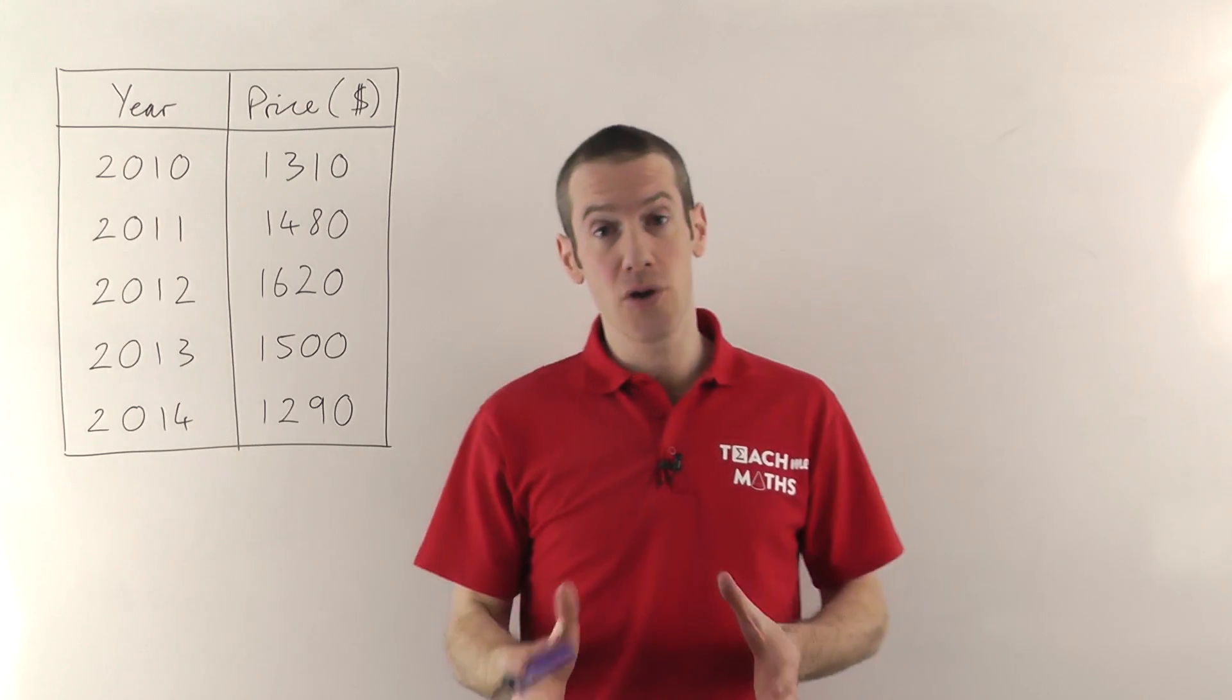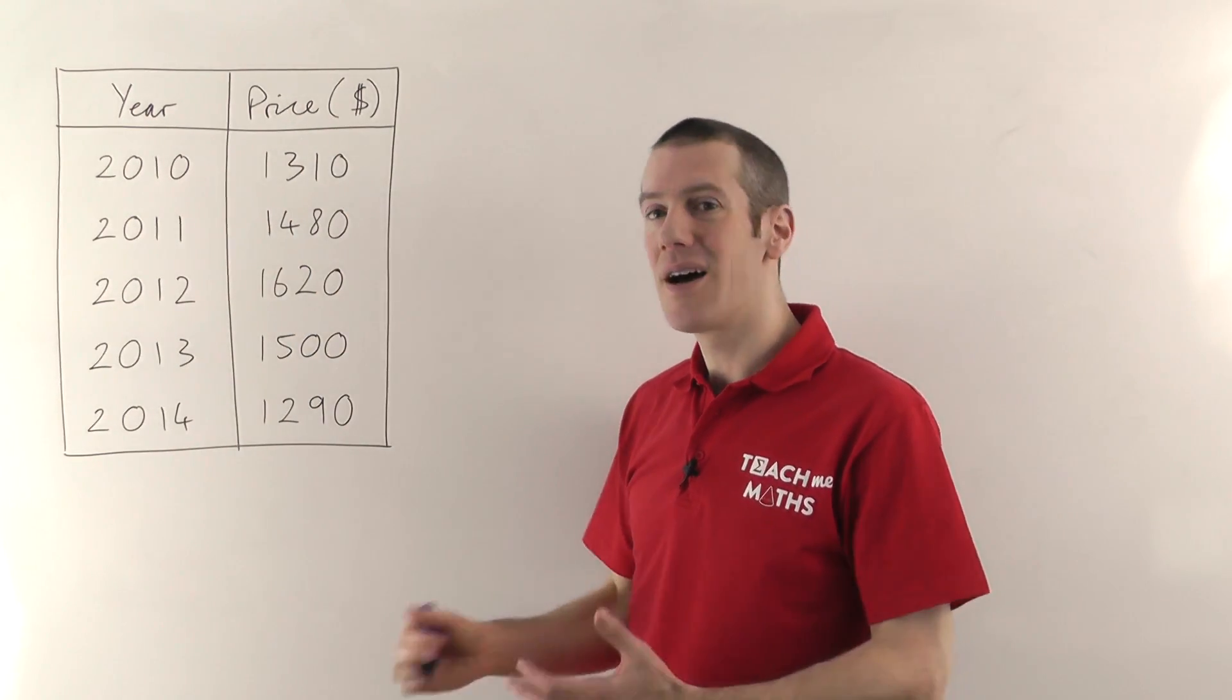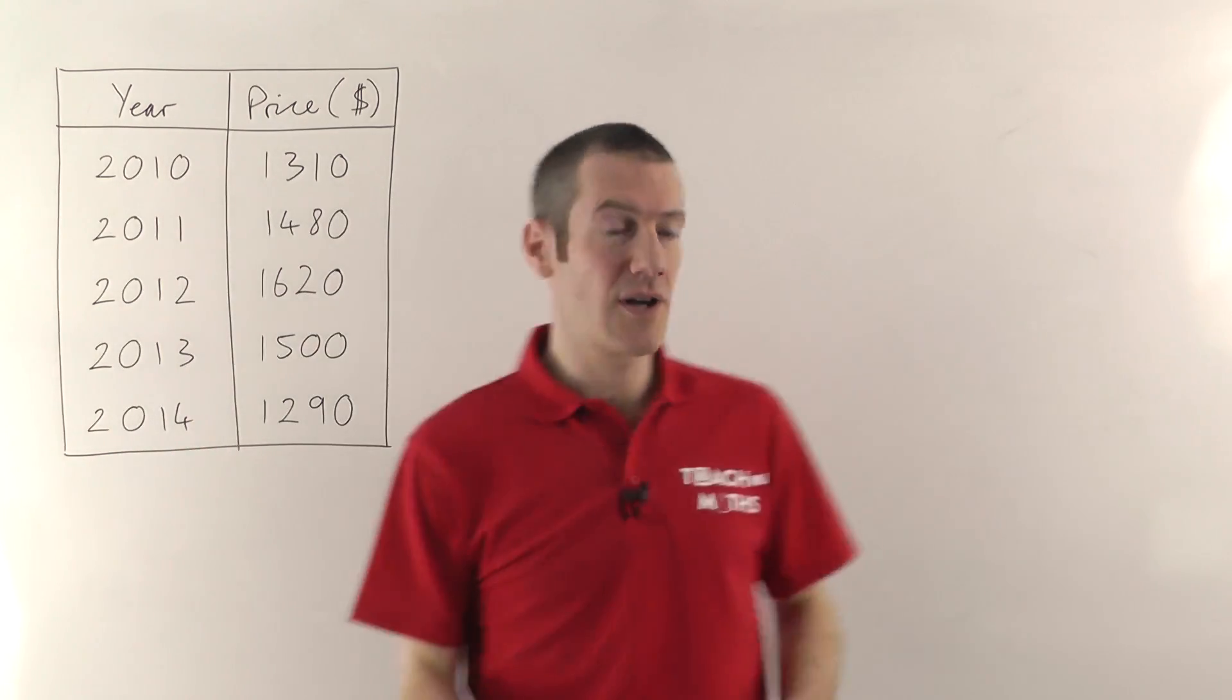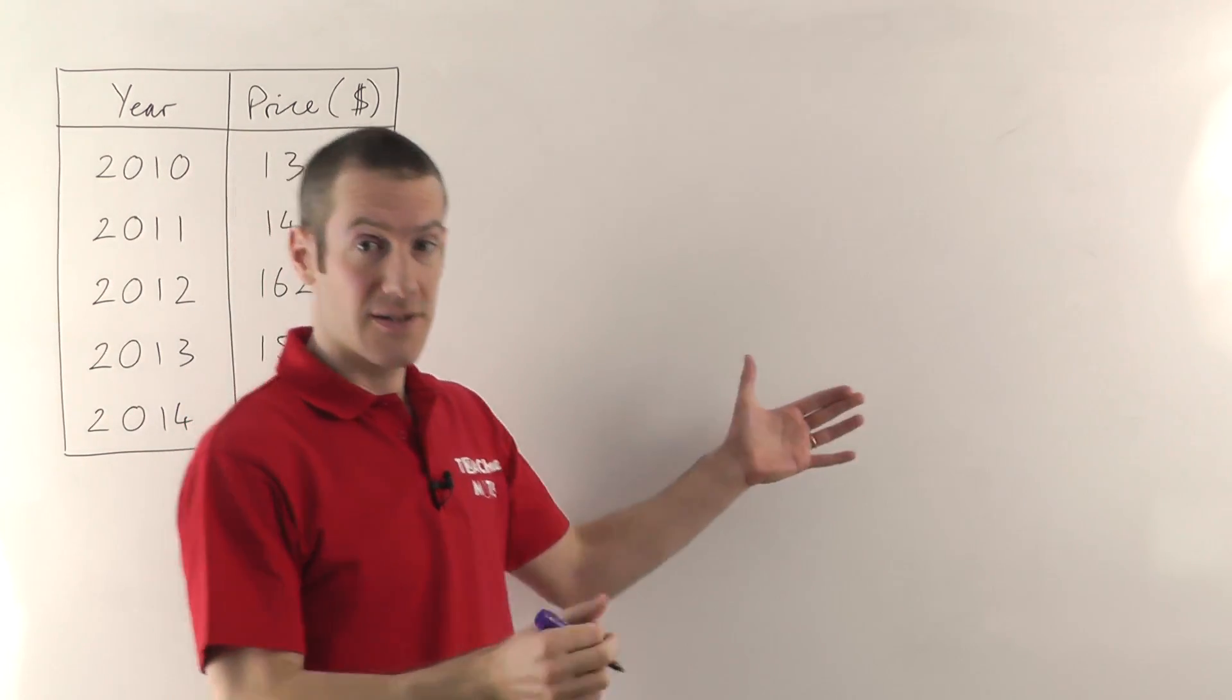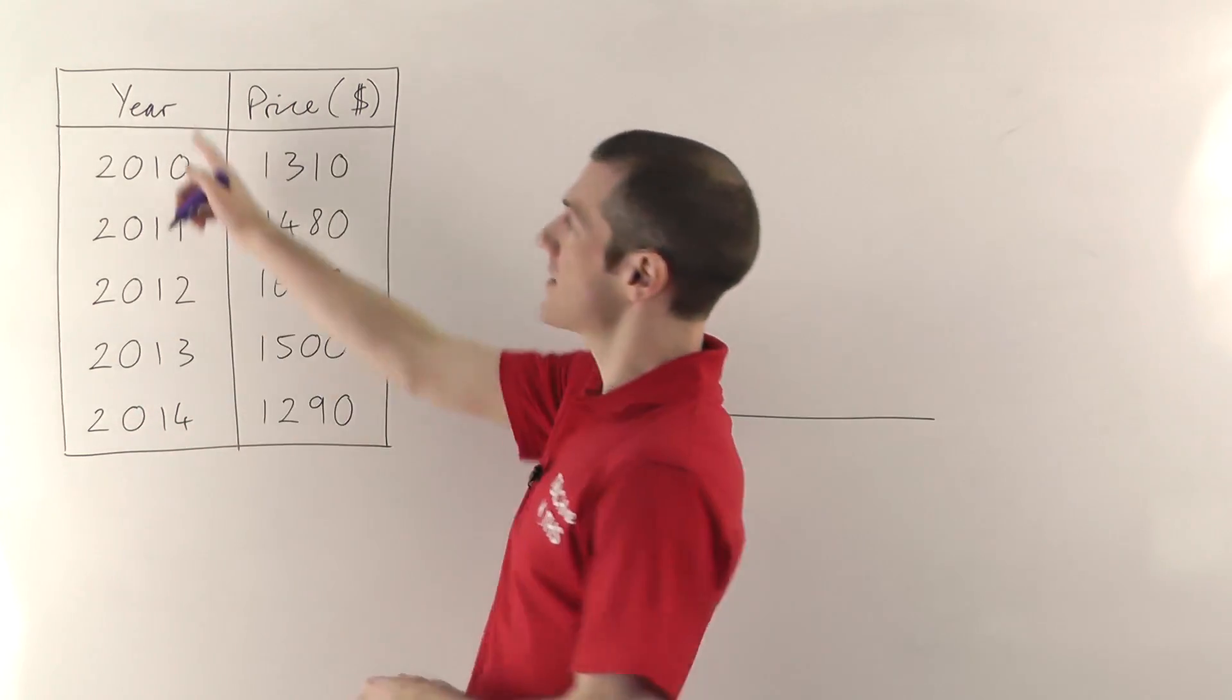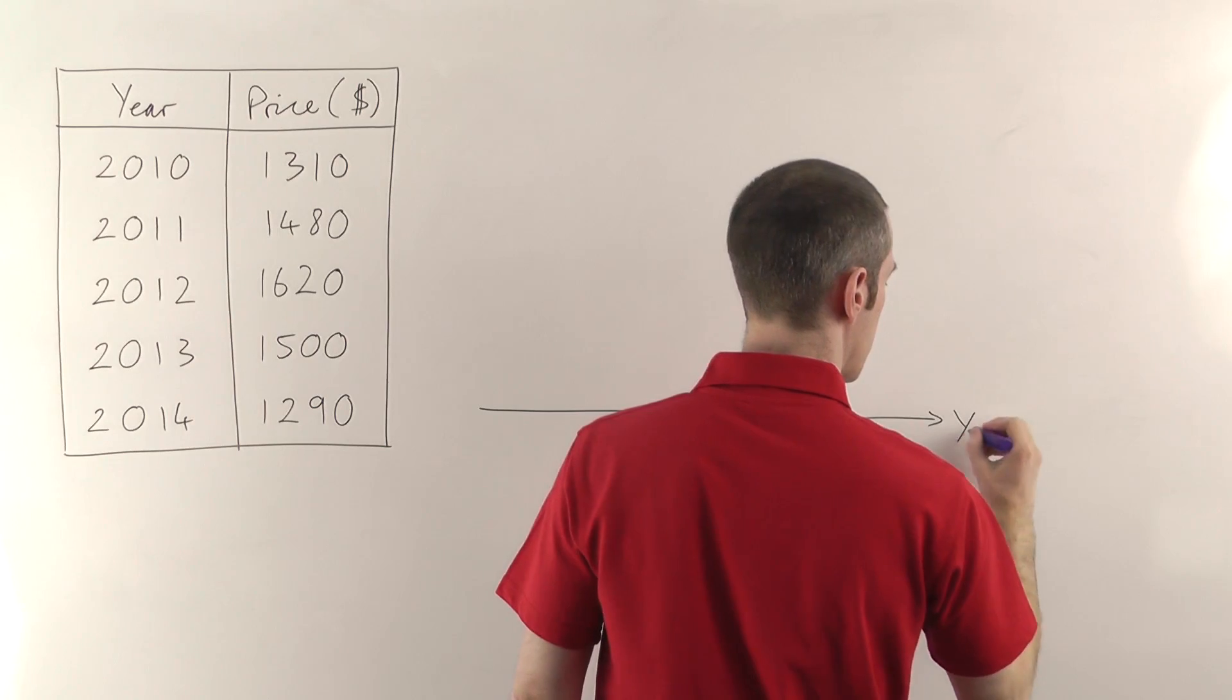So for a line graph you always have two axes, one to represent each of the things that you're plotting. The time axis or the progression axis, which is going to be this one here, always goes along the bottom. So that's the first thing you want to get right. Your progression, in this case the years, are going to go along the bottom. So I'll write years here.